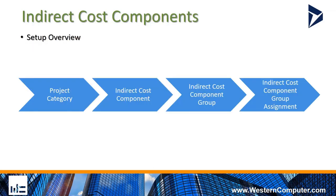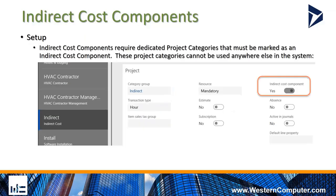An overview of what we need to set up: first and foremost, you have dedicated project categories for your indirect cost components. Those categories get assigned to the indirect cost components themselves. Those indirect cost components are then combined into an indirect cost component group. And once you have a group of components, that group is assigned to your project. There's some flexibility in how those groups can be assigned.